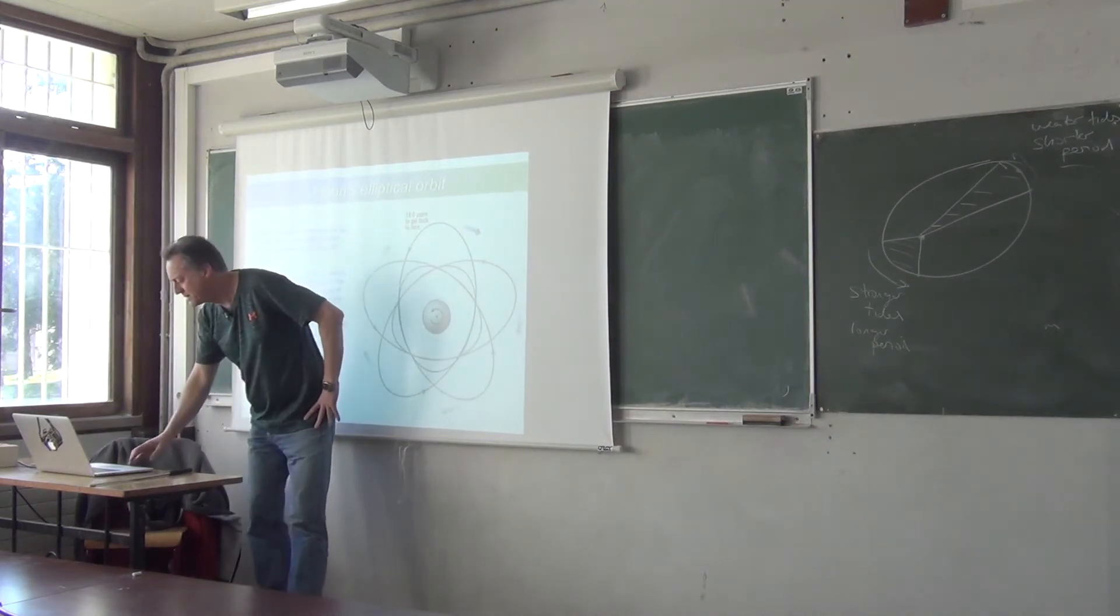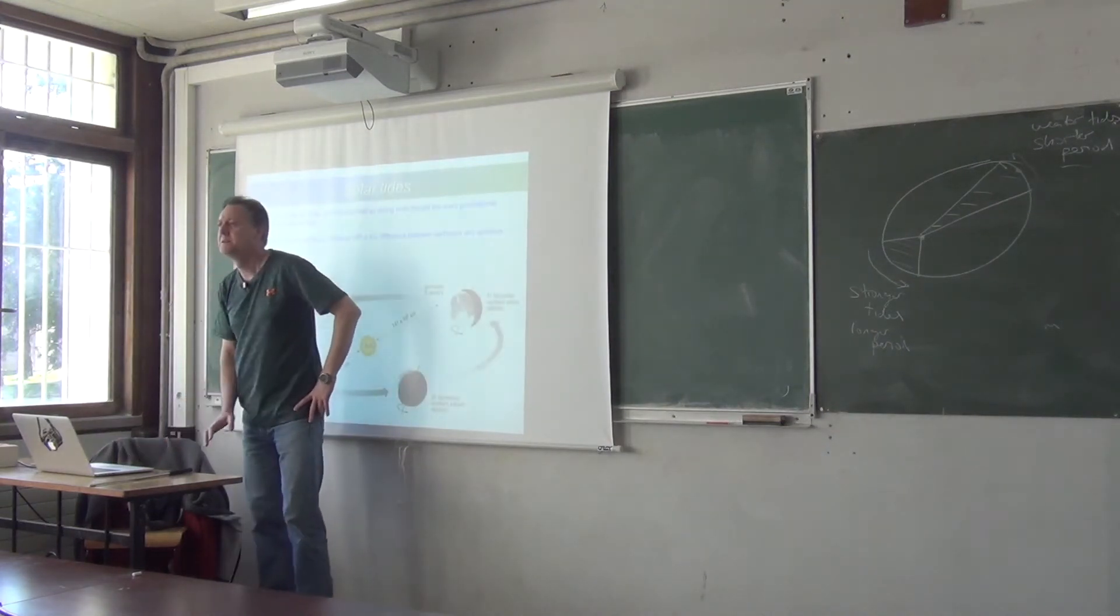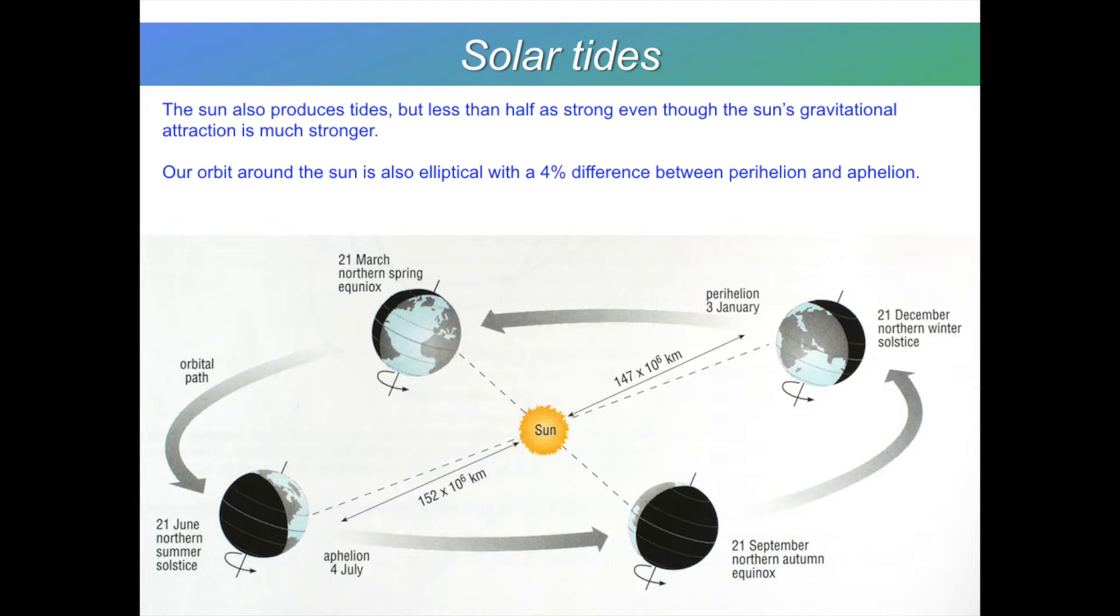So that's the Moon. Time to bring the other player into the picture, and that is the Sun. Now, the Earth goes around the Sun, and the Sun causes tides as well.